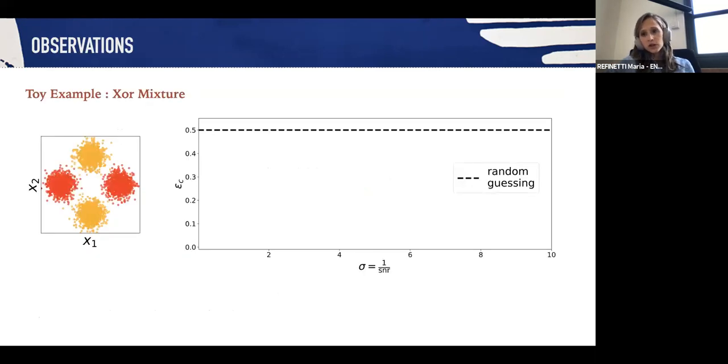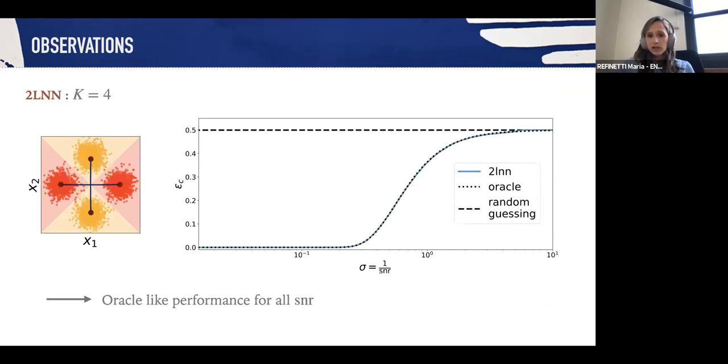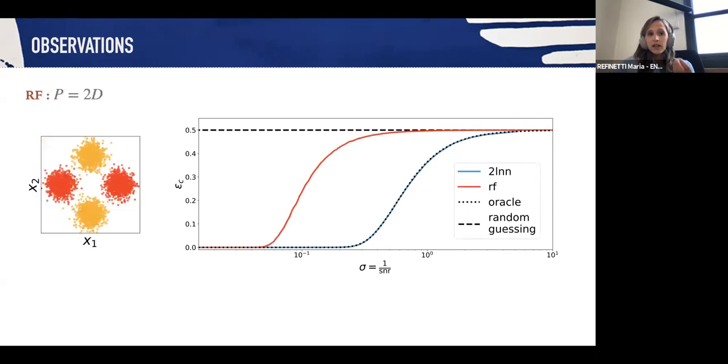First, what are our observations on this XOR-like mixture? One might say that I can compute an oracle-like performance in which I am given knowledge of the means, and once I take a point I assign to it the closest cluster. I can then compute the theoretical classification error of this oracle. By looking at how a two-layer neural network is going to learn the task, I can see that for high SNR this two-layer neural network is able to achieve oracle-like performances. In a sense, with four hidden nodes it's able to learn the mixture and align each node to the means of the mixture.